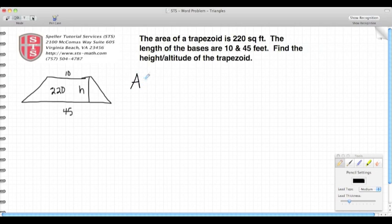The formula for area of a trapezoid is area equals the height divided by 2 times the quantity base 1 plus base 2. Now that I have this equation, I'm going to fill in the given facts from the word problem. We know that the area is 220 square feet. We don't know the height so we keep that as h. We know base 1 is 10 feet and base 2 is 45 feet.